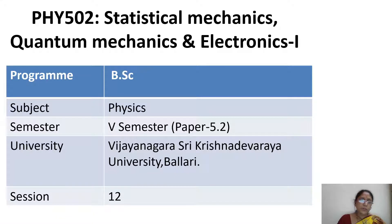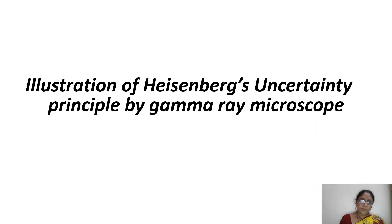I am Shalini, working as assistant professor of physics. I am going to discuss the topic for B.S.A. fifth semester paper 5.2 for session 12. The topic of session 12 is illustration of Heisenberg's uncertainty principle by gamma ray microscope.